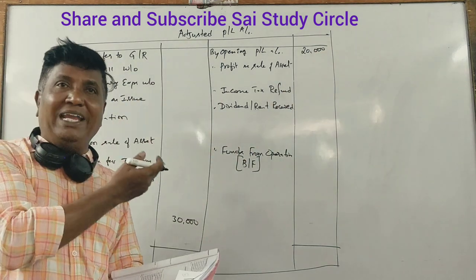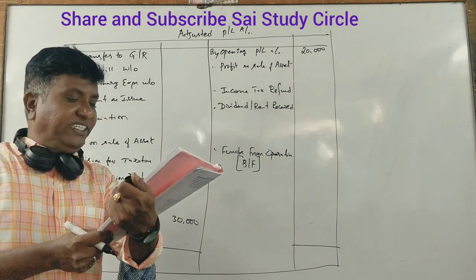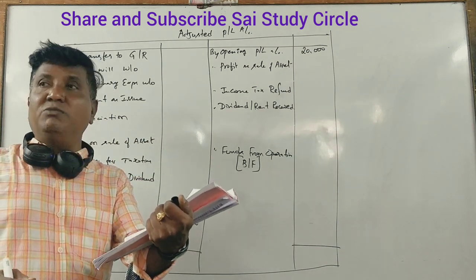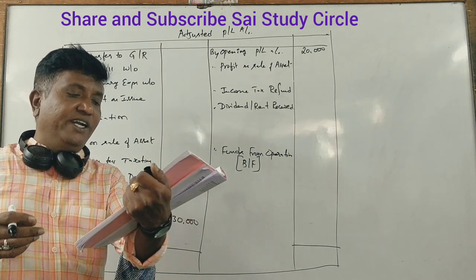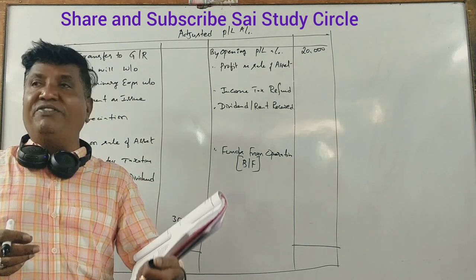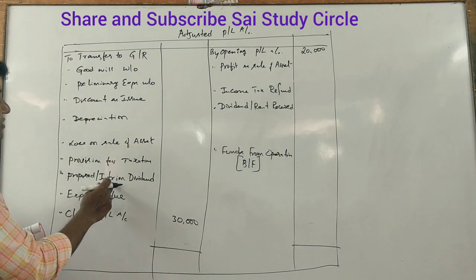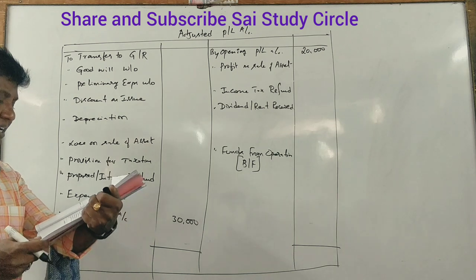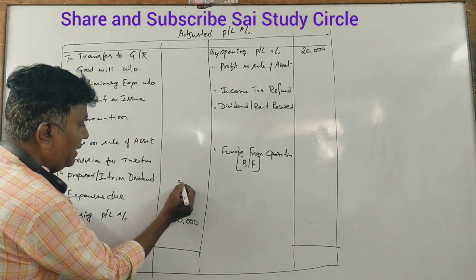We have the opening balance and closing balance. For the year ending 31st March 2009, a provision for dividend was made to the extent of $50,000. The proposed dividend and interim dividend together amount to $500,000.